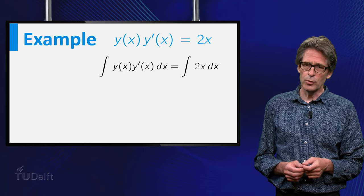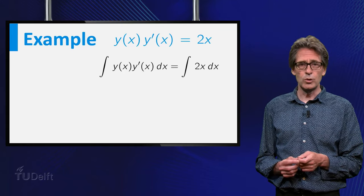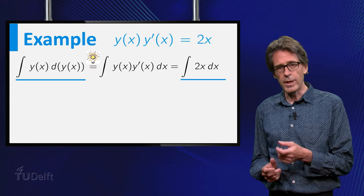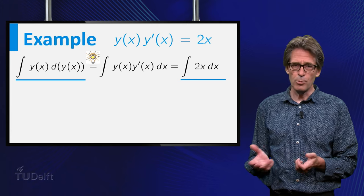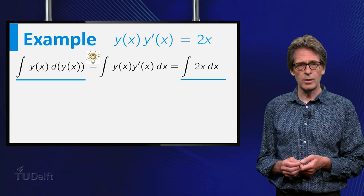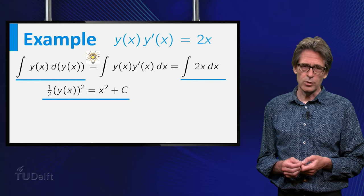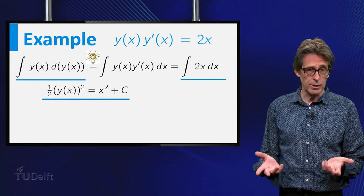For the integral on the left, you can use the substitution method, and rewrite it as the integral of y(x) dy(x). Now perform the two simple integrations, and you find that half y squared equals x squared plus c, the implicit solution.